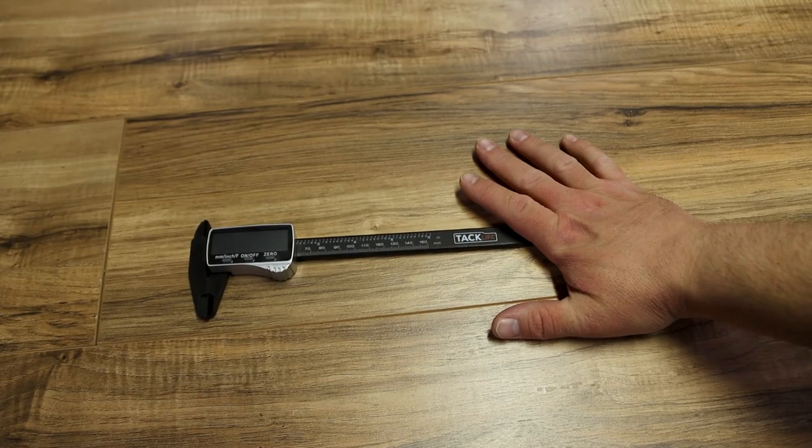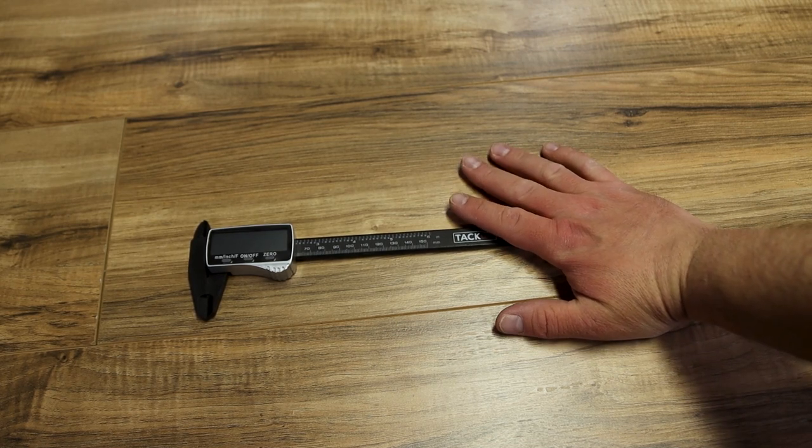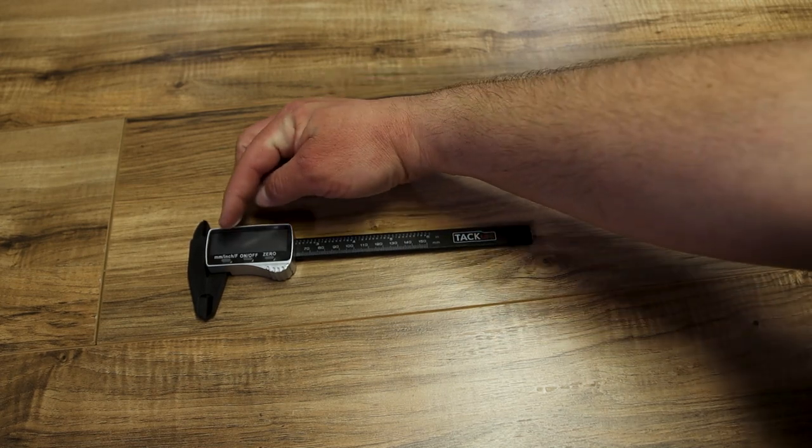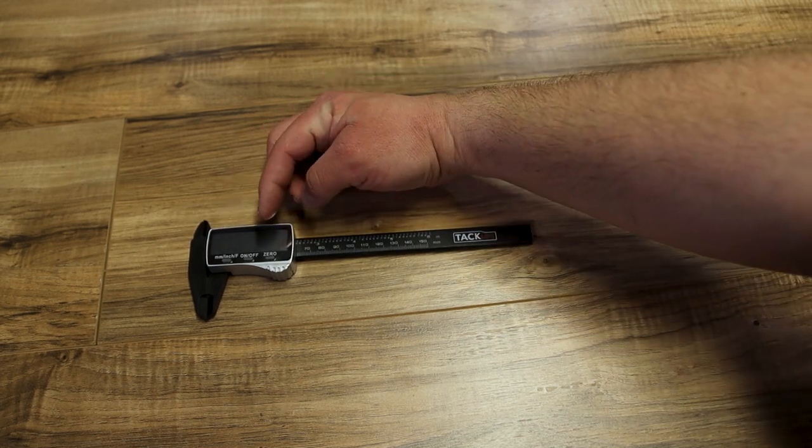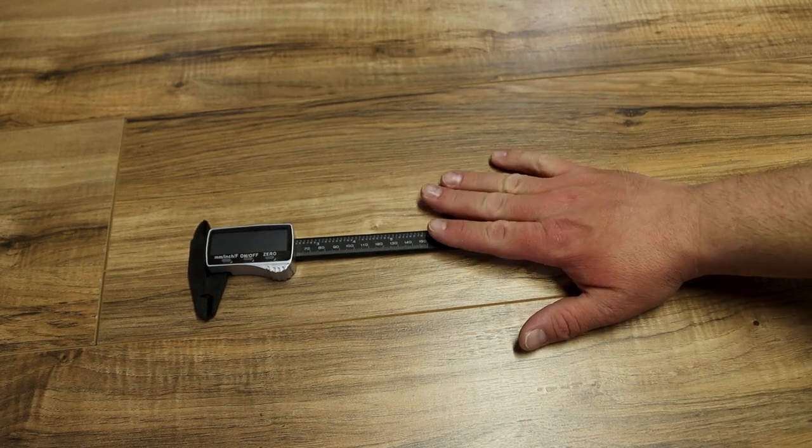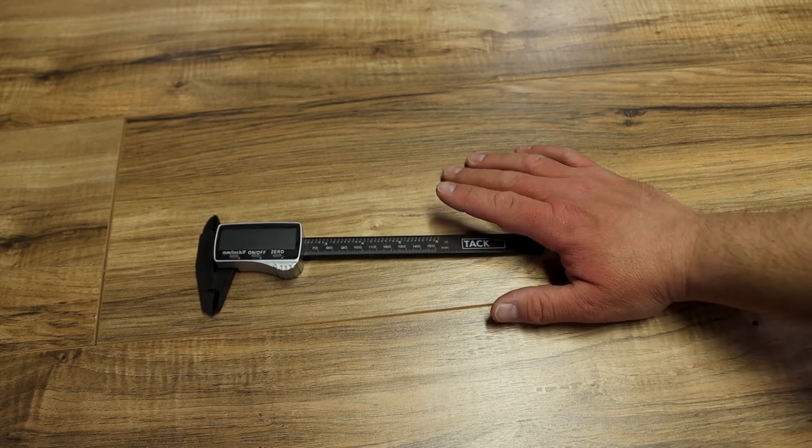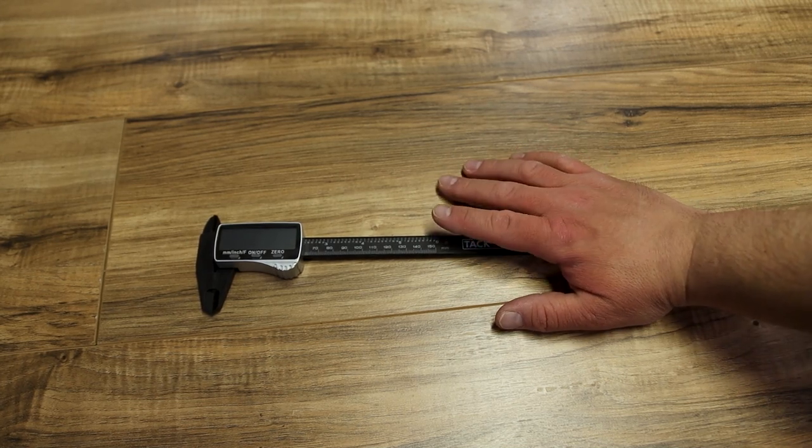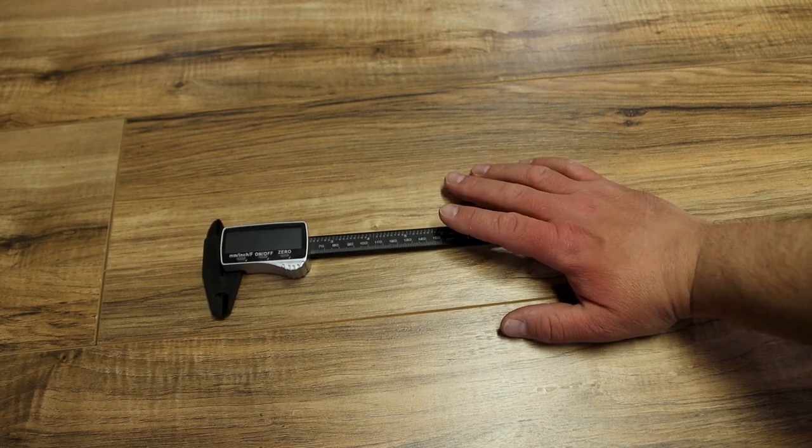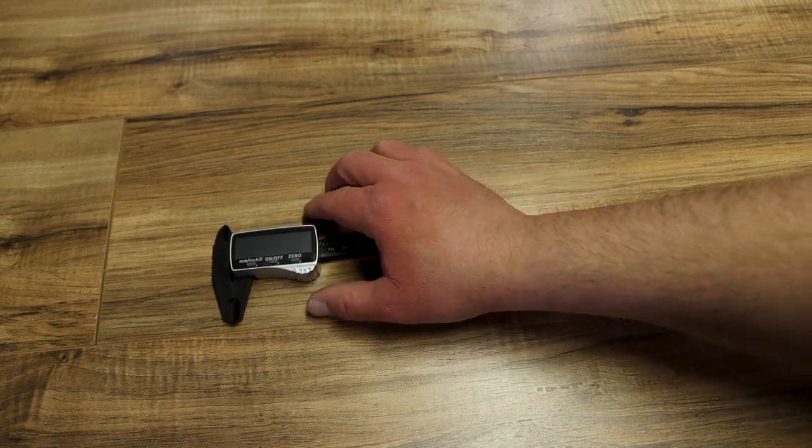Another thing you might want to get is a caliper like this one. Now this one is kind of an inexpensive caliper but it works. It does millimeters, inches, etc. You can turn it on and off. You can zero it. It has everything that I need to dial in and calibrate a 3D printer. You'll use this on calibration cubes. You'll use this to calibrate e-steps and a bunch of different things. And these are actually not that expensive and they work very well.